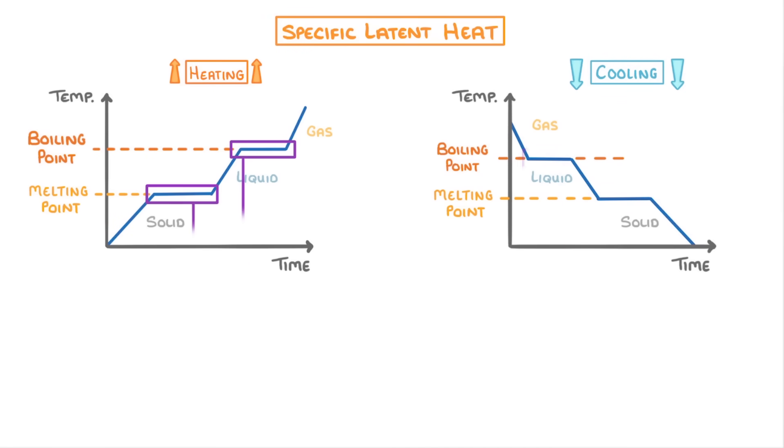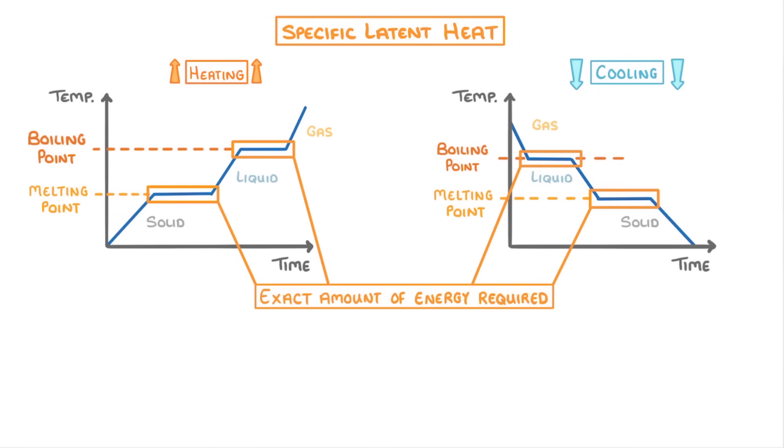Now, the exact amount of energy that's required to change the state of the substance, while the temperature remains the same, is known as the latent heat. And it depends on two things: the type of substance that we have, and the amount of that substance.